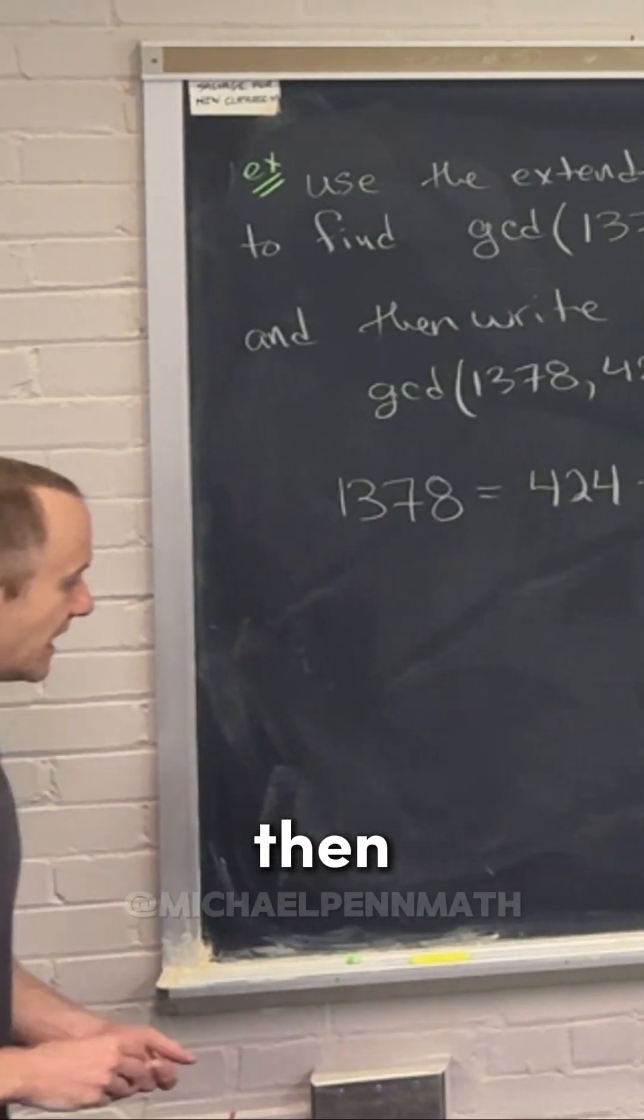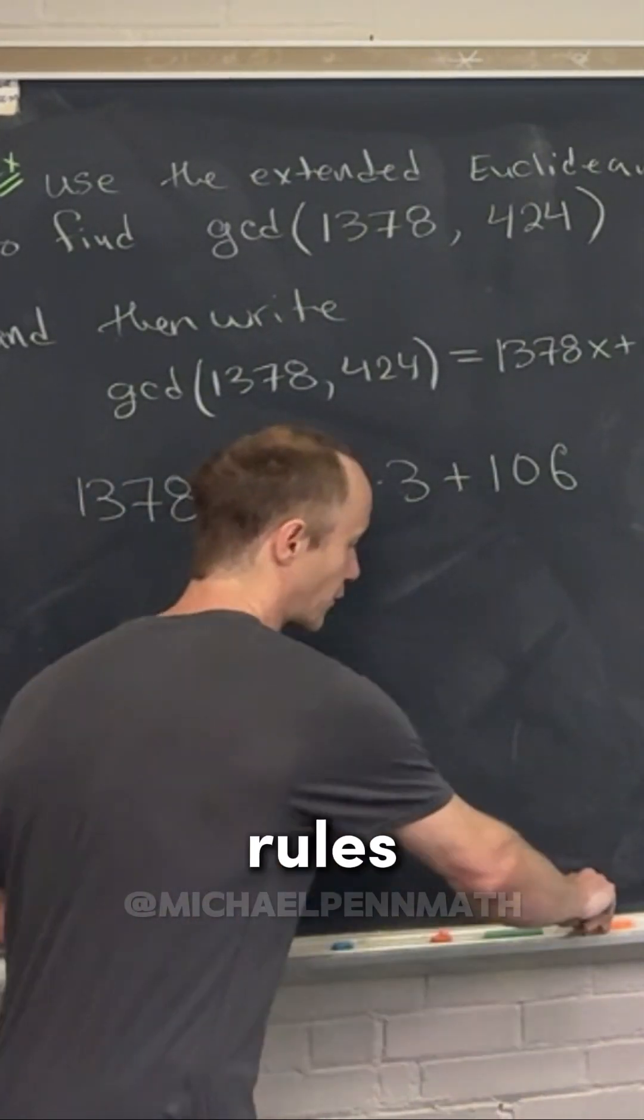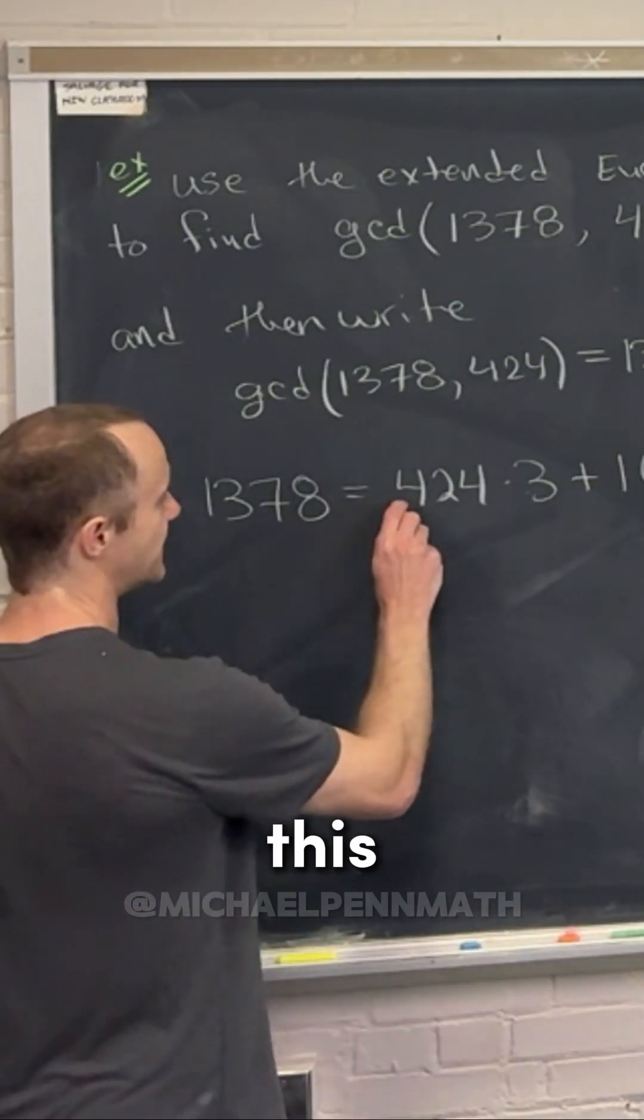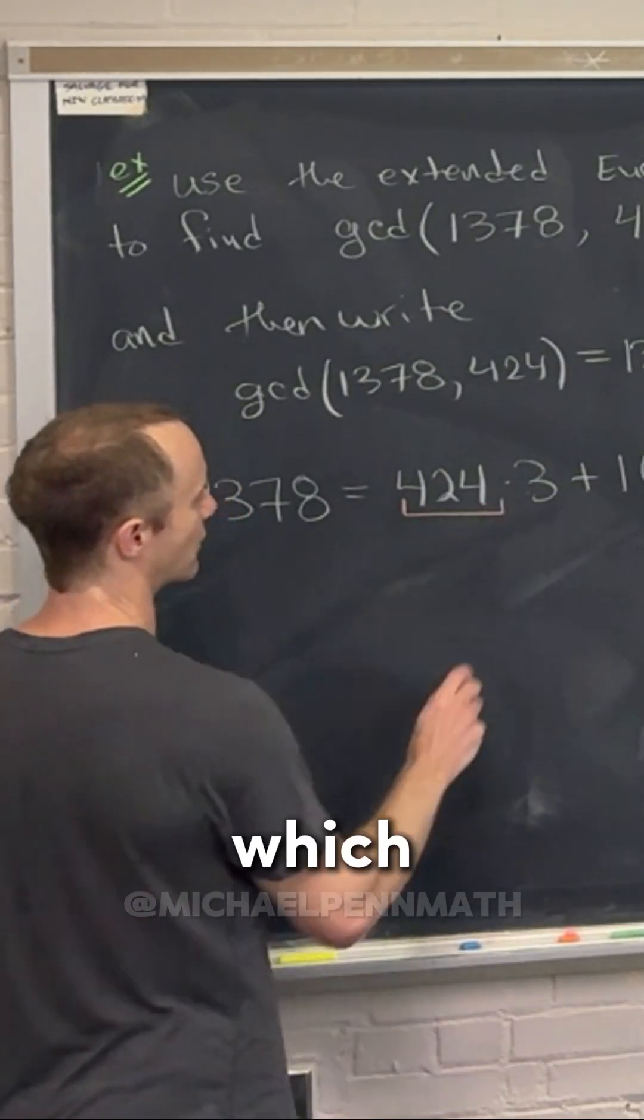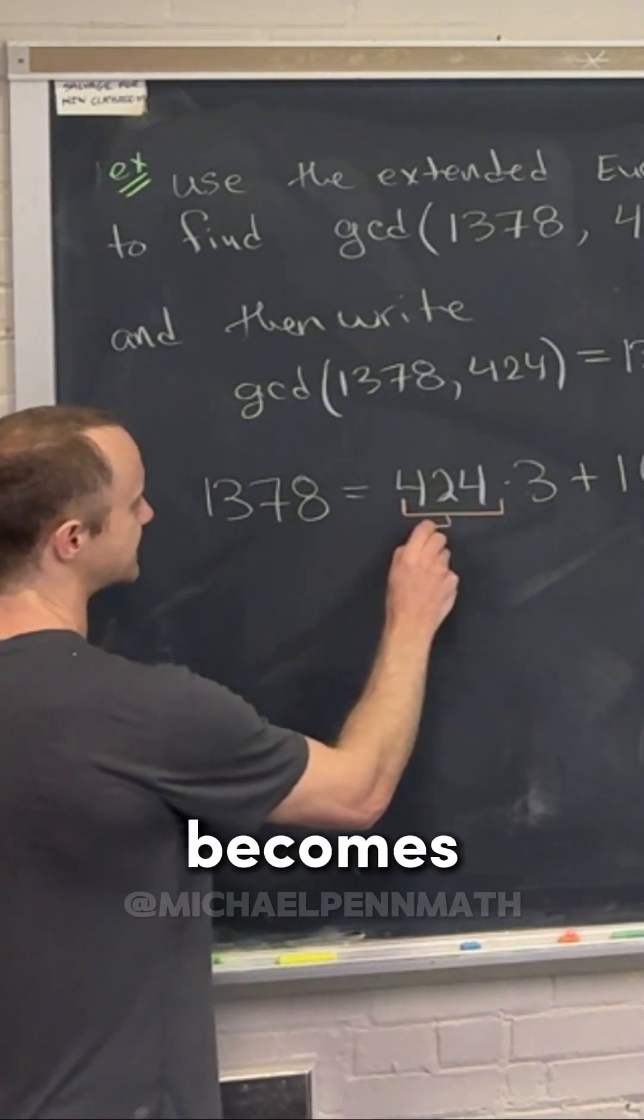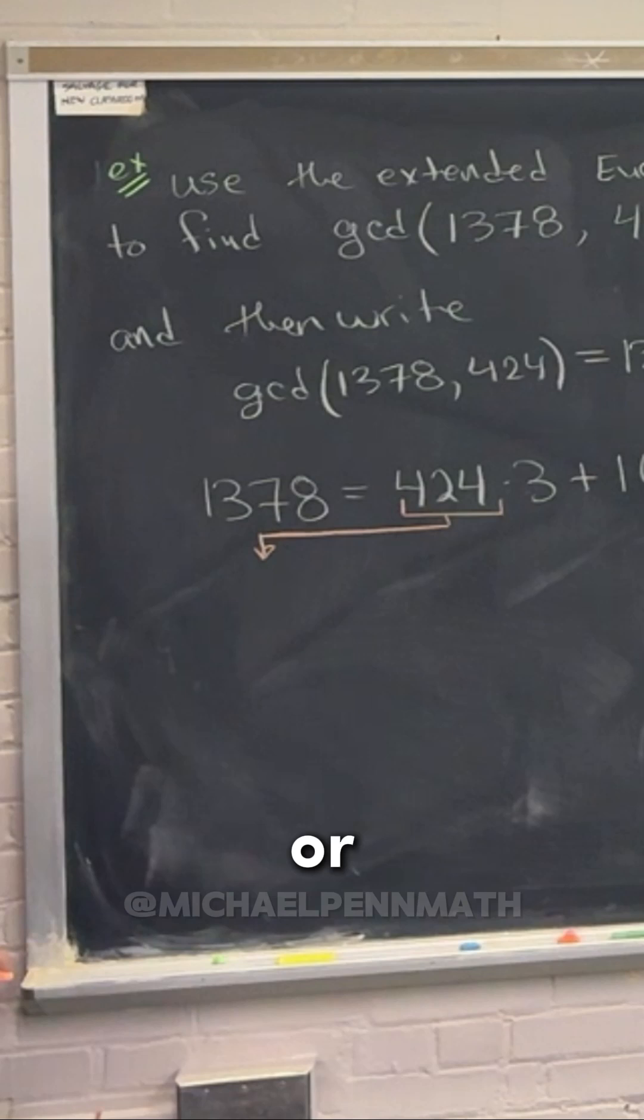That's the first part. Then from there, the roles of these numbers change. This number right here, 424, which was the divisor in the first step, becomes the thing being divided, or the dividend, in the second step.